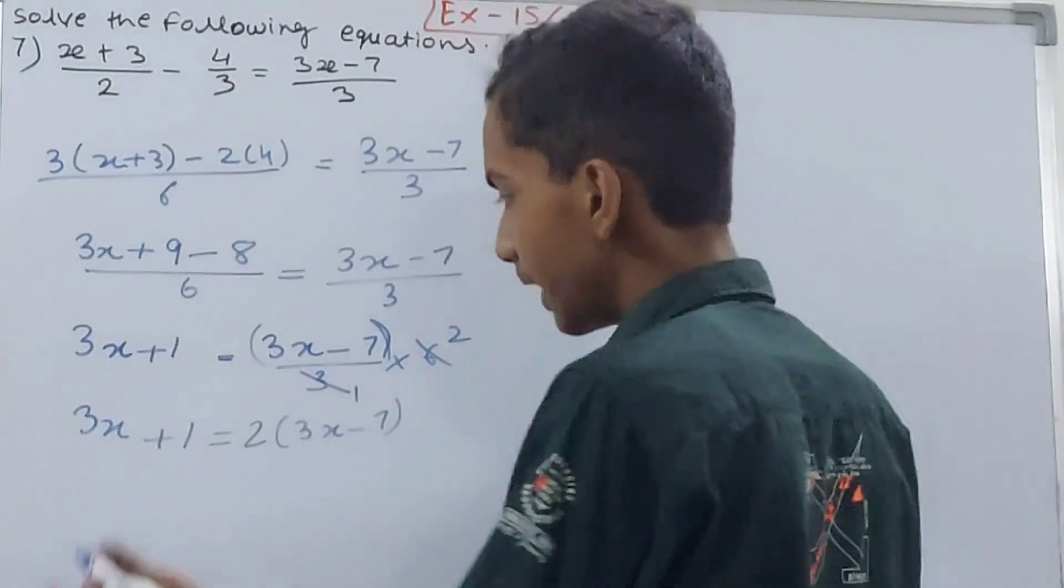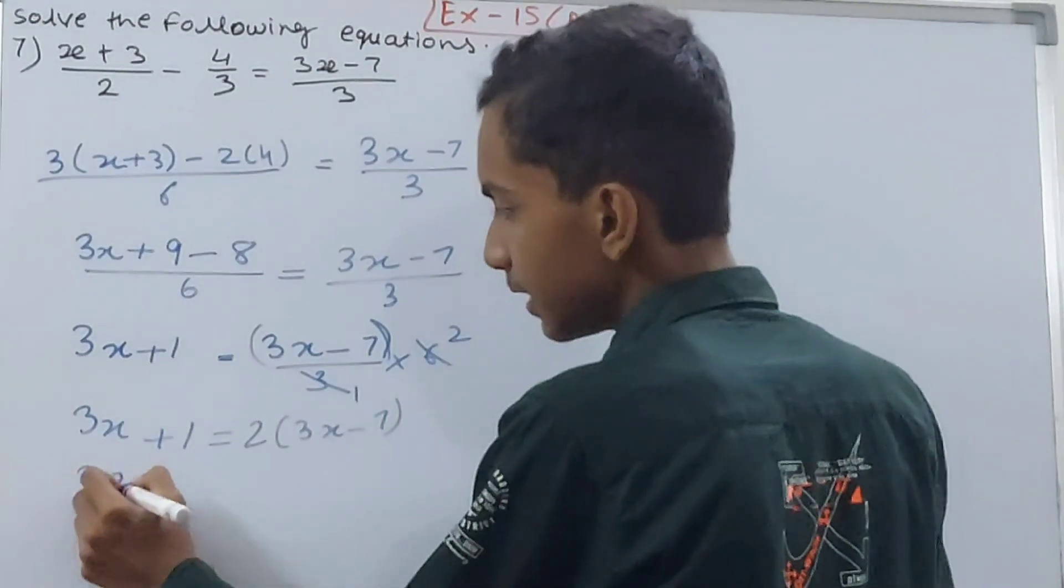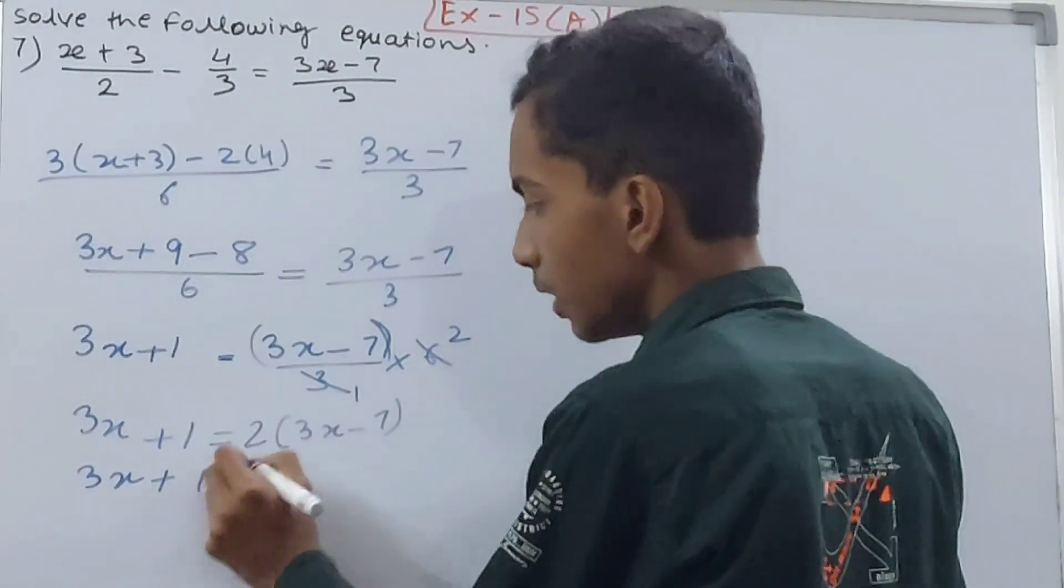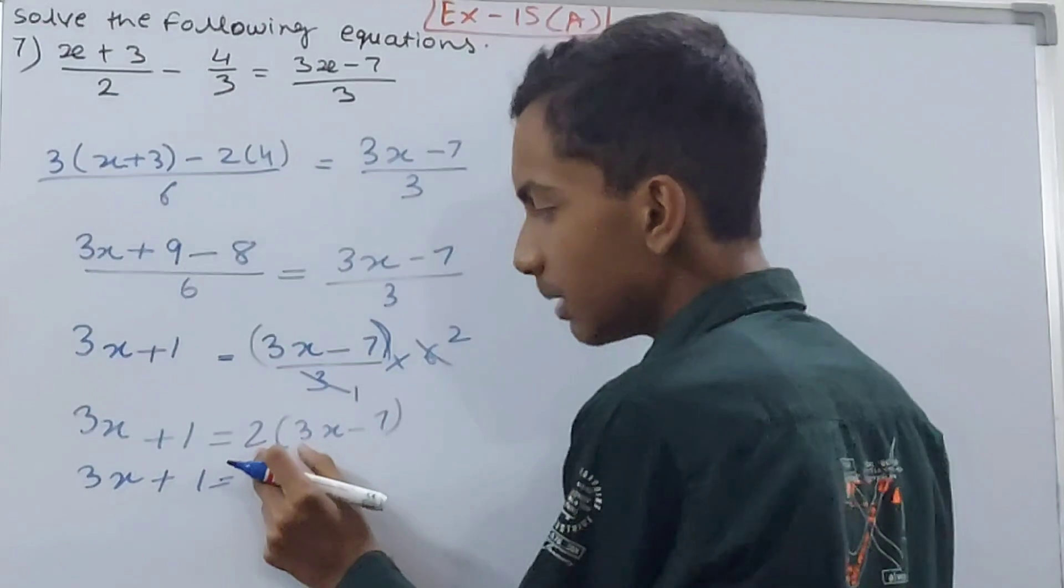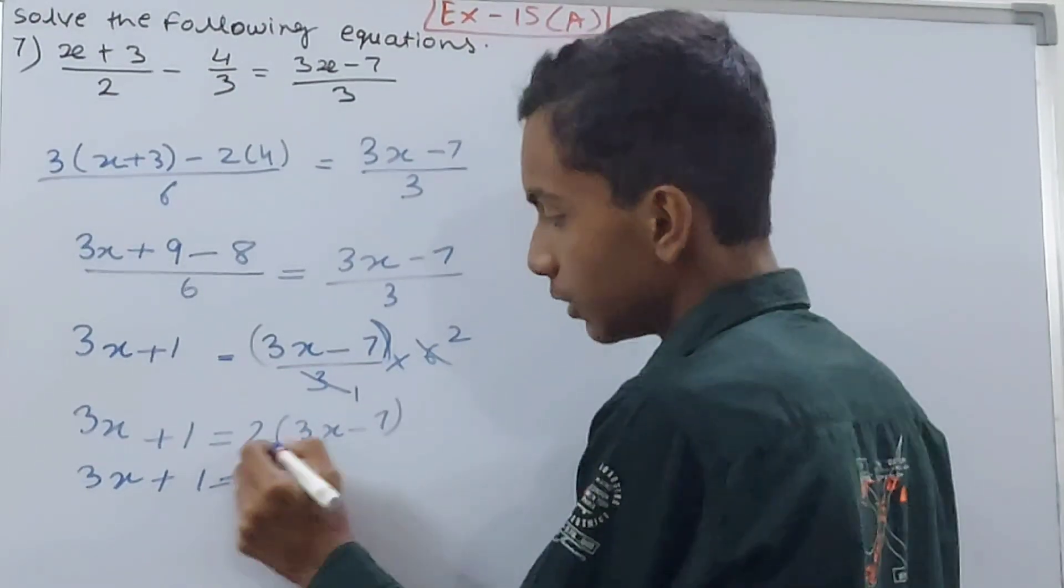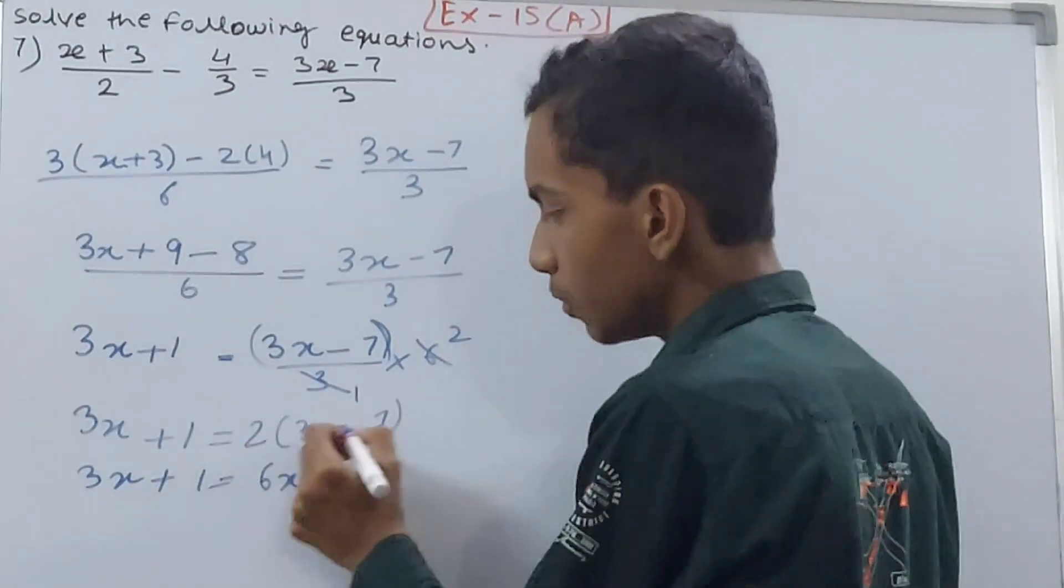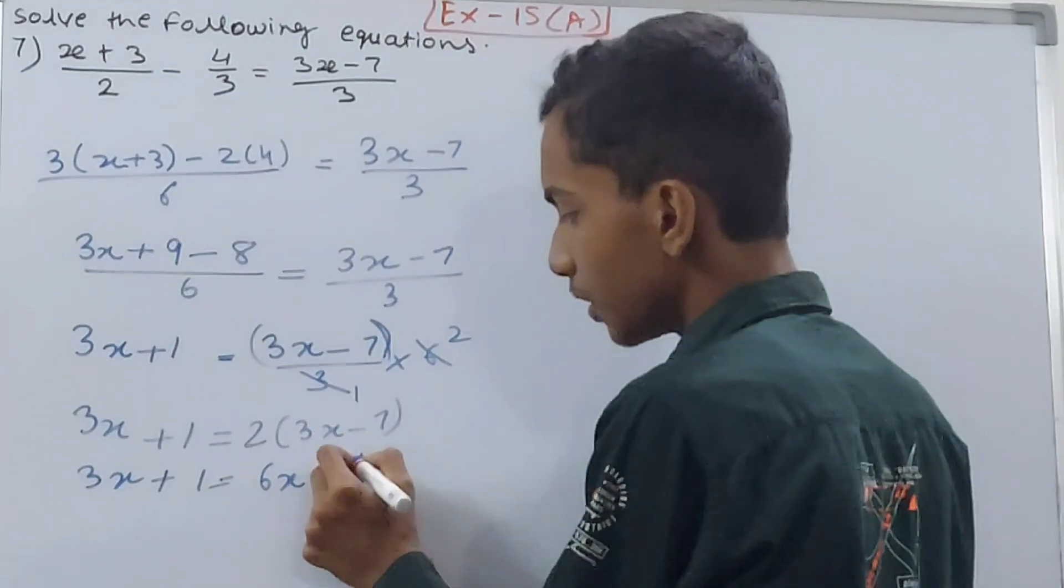into 3x. Just multiply the numbers in such cases, right? So 2 into 3 is 6x, and 2 into minus 7, that's minus 14. Now I'll just do the transposition.